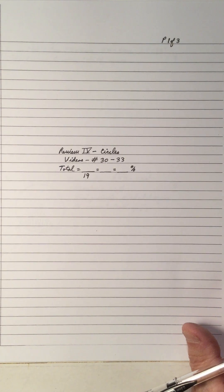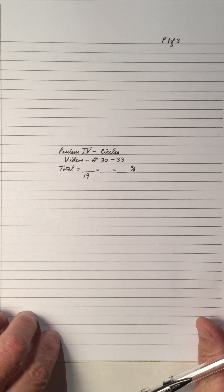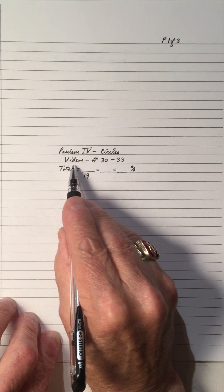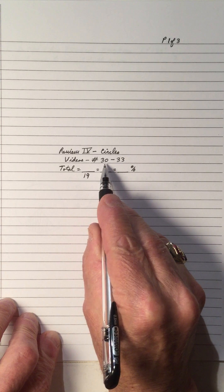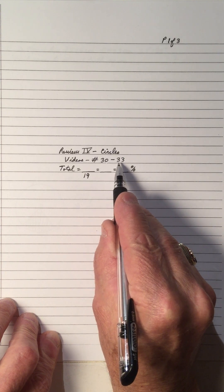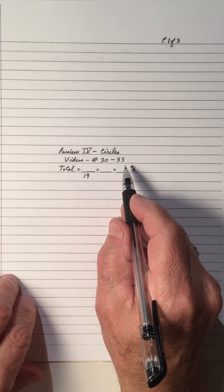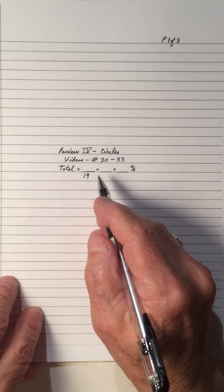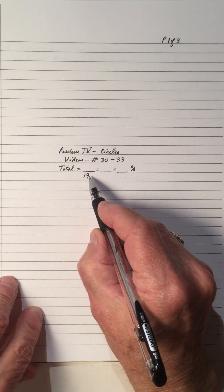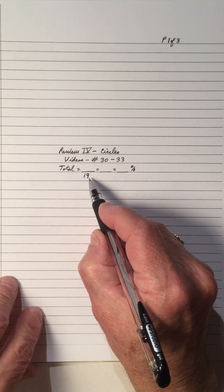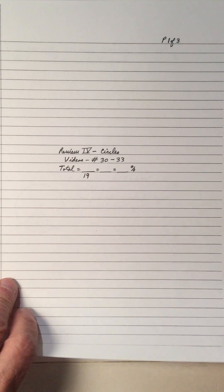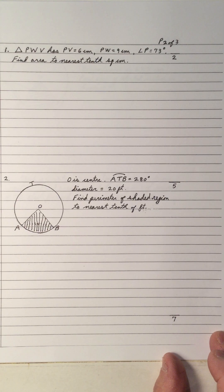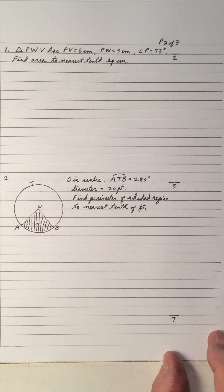Hi, welcome to my video, which is Review 4 on the circles. This video review covers videos numbers 30 to 33. As in previous reviews, it's treated as a quiz where the questions could be marked to give a certain number of marks, and the total when you add up all the pages is 19. So let's do some extra practice and review on the videos.